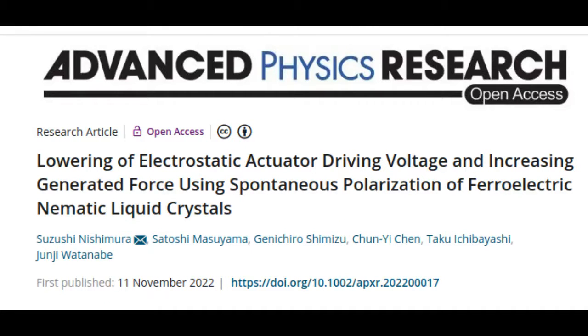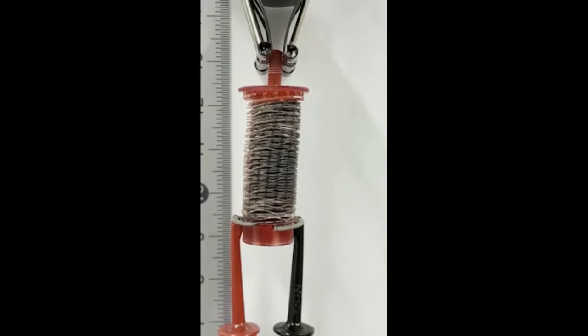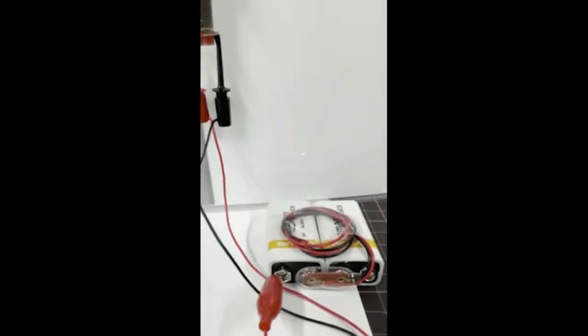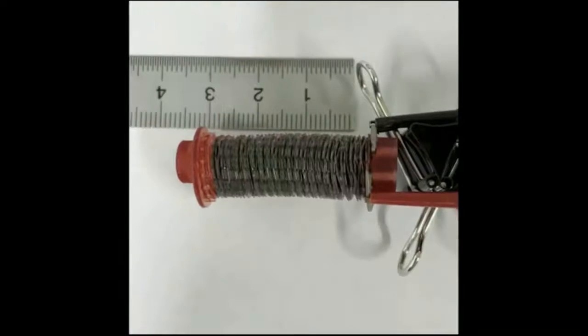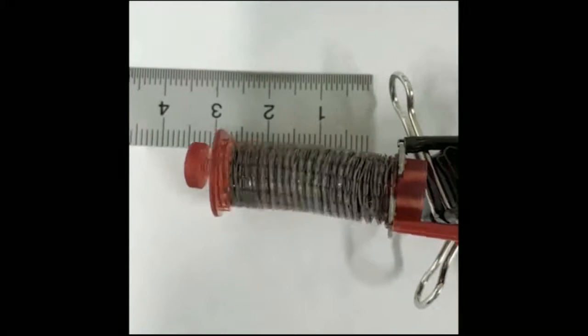When ferroelectric materials are subjected to an electric field, charge separation occurs. However, unlike conventional paraelectric materials, ferroelectrics retain their polarization even after the removal of the electric field, enabling them to maintain a high number of accumulated charges at a low voltage.